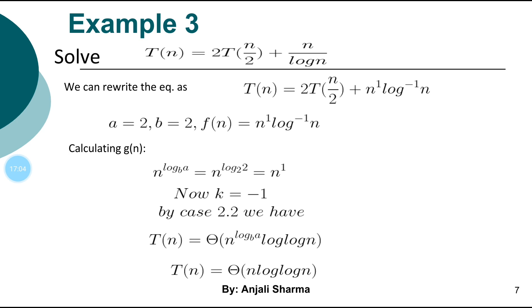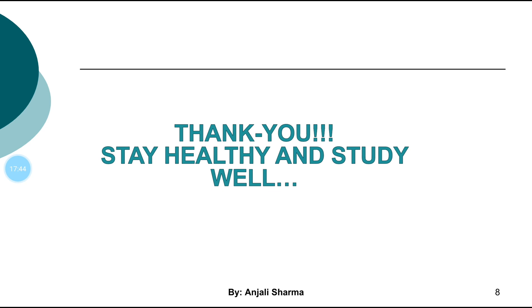Similarly, if we modify to n divided by log² n, the power becomes minus 2, so k = minus 2 which is less than minus 1, and we use the third extension formula, giving time complexity Θ(n). The key points to remember: check if f(n) is non-polynomial; if so, apply the extension. Verify f(n) equals g(n) times some power of log n, identify k, and apply the appropriate extension formula. So that's all with this video — thank you for watching, and I'll see you in the next lecture.